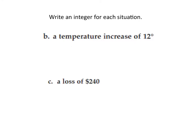Our next slide has the same directions: write an integer for each situation. In B, we have a temperature increase of 12 degrees. An increase in a word problem means to add, but in this case we're going to treat it as a positive. So we have positive 12 degrees, or most of the time we just write 12 degrees — they both mean the same thing.